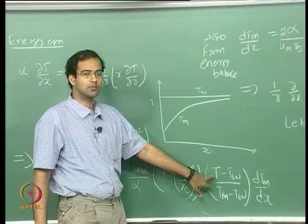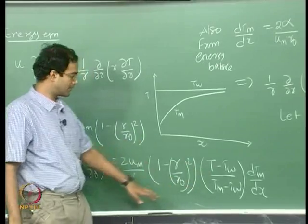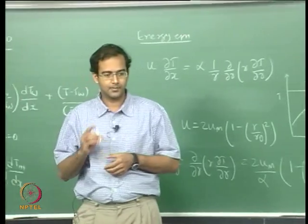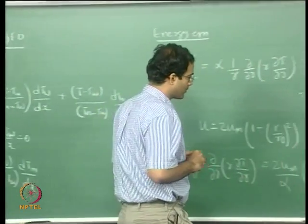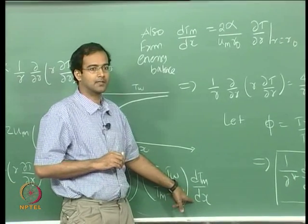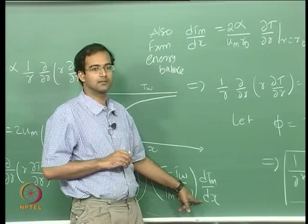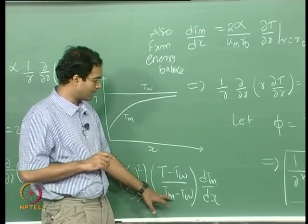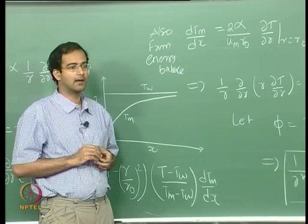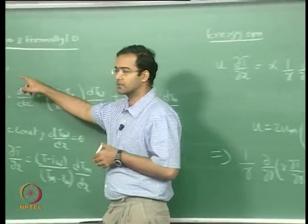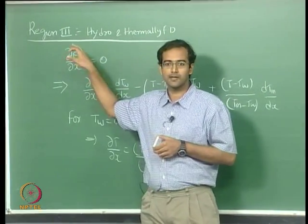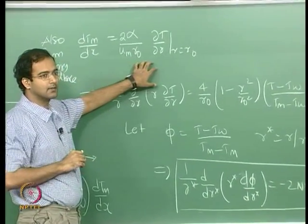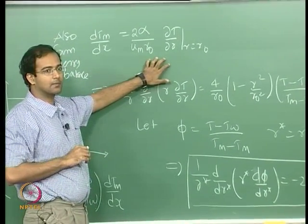On the right-hand side, T is a function of both X and R. So this equation is now a partial differential equation, and there is a chance you can convert this into an ODE provided you can express DT_M/DX as a function of DT/DR. You can substitute for (T - T_wall)/(T_M - T_wall) in terms of phi. Since D(phi)/DX is 0, phi is only a function of R, allowing conversion of this PDE into an ODE.